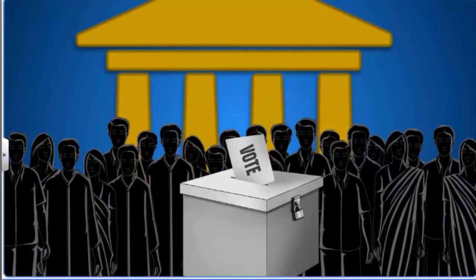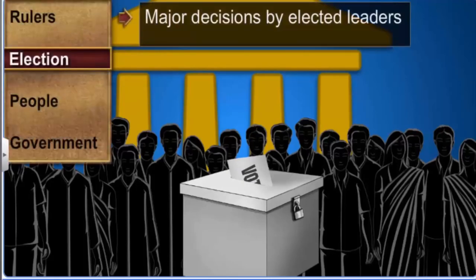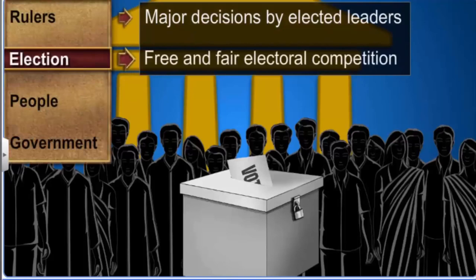In free and fair elections, the ruling party also faces a fair chance of losing. That is the second feature of a democracy. Let's move on to the third and most important keyword: people.